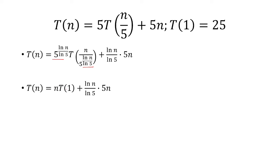So that's why we have an n in front. So it's n times T of 1 plus ln of n over ln of 5 times 5 to the n, or times 5n.